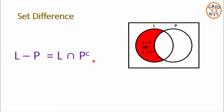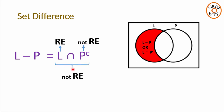On the right-hand side, L is recursively enumerable and P is also recursively enumerable. But as seen on the last slide, P complement may not be a recursively enumerable language. While the intersection of two recursively enumerable languages is recursively enumerable, here we are taking the intersection of a recursively enumerable language with a non-recursively-enumerable language, which may not be recursively enumerable.